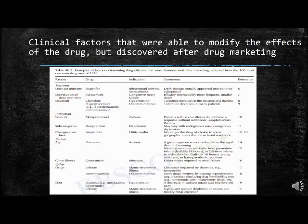For example, hypoglycemic agents may be used to control the symptoms of diabetes or to prevent its vascular complications, but only the former was studied prior to drug marketing. Clinical factors that were able to modify drug effects — discovered after marketing — include ibuprofen, which was initially approved at a suboptimal daily dosage for rheumatoid arthritis and osteoarthritis, and ampicillin for otitis media, which is no longer the drug of choice in some geographic areas due to bacterial resistance.